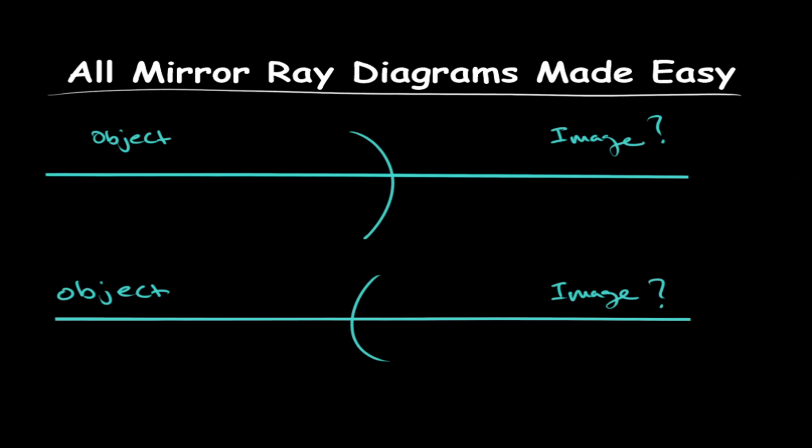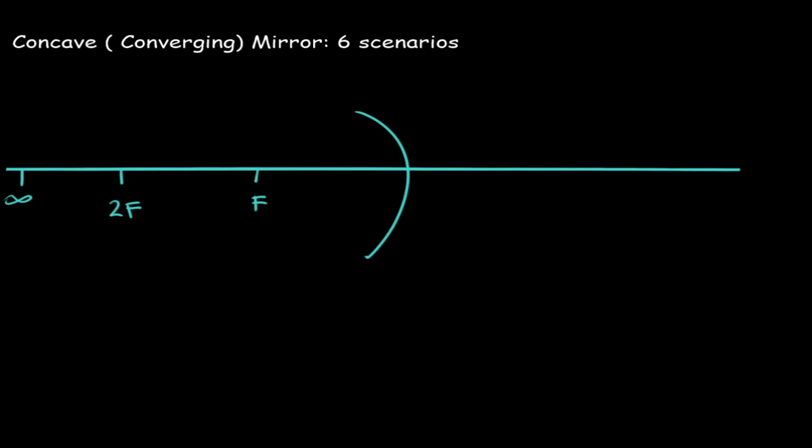In today's video we will be looking at a trick to memorize all the mirror ray diagrams to help you on your exams. Here we have a concave or a converging mirror and there's going to be six scenarios we're going to be looking at, where the object can be placed and where the image will be formed with a converging mirror.